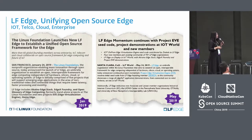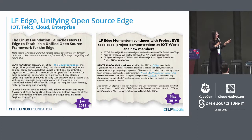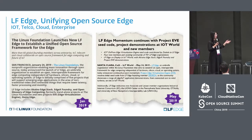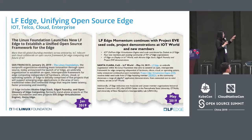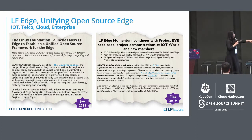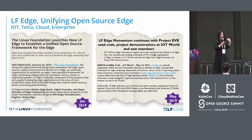The Linux Foundation launched the new LF Edge to establish a unified open source framework. This year, for example, projects include Equino, Eve, Home Edge, and Glossary, which is working on the terminology. It integrates all of these into the foundation edge, that is LF Edge. You can see the definition in their blueprint as well as use cases.